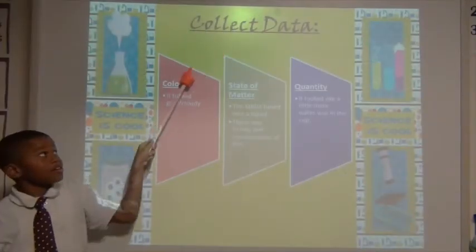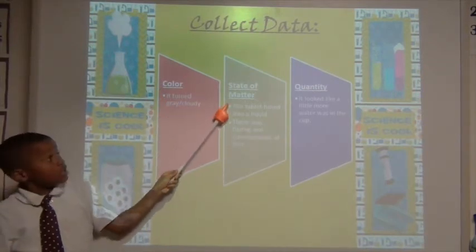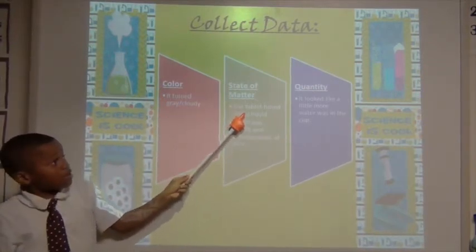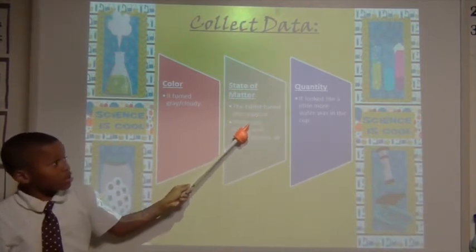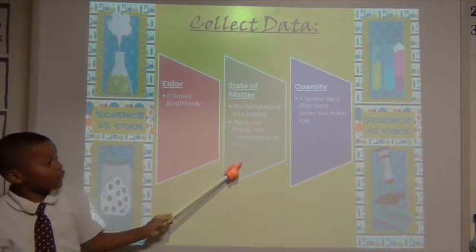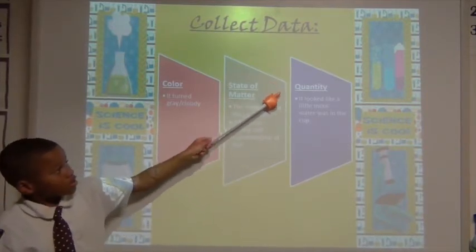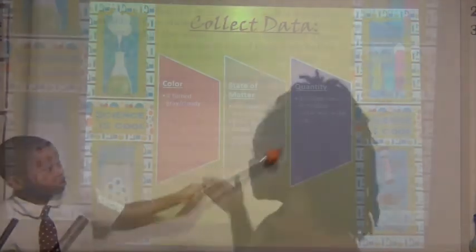Collect data. Color: it turned gray or cloudy. State of matter: the tablet turned into a liquid. There was fizzing and condensation at first. Quantity: it looked like a little more water was in the cup.